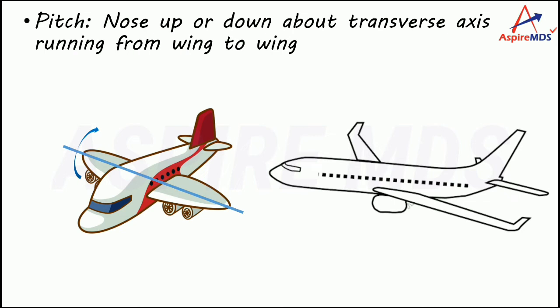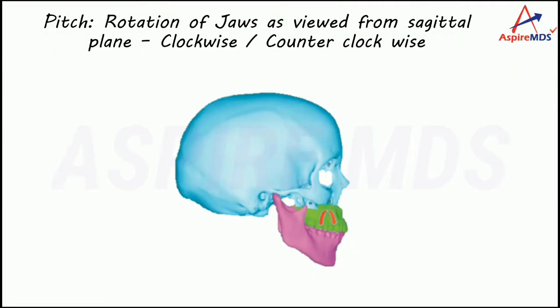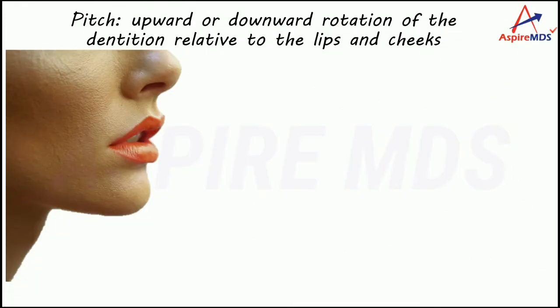This same kind of movement — pitch — can be seen in the skull when viewing it in the sagittal view, that is, from the side. In that case, if either jaw — the maxilla or mandible — is rotated clockwise or counterclockwise, we call it pitch. This can also be achieved during orthognathic surgery. When talking about just the dentition, pitch means upward or downward rotation of the dentition.